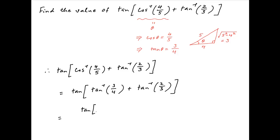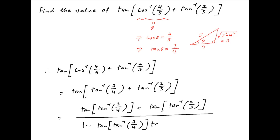Therefore this expression is equal to tan of tan inverse 3 upon 4 plus tan of tan inverse 2 upon 3 divided by 1 minus tan of tan inverse 3 upon 4 multiplied by tan of tan inverse 2 upon 3.